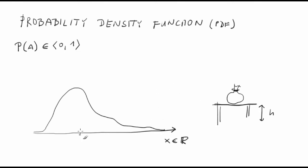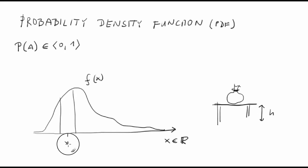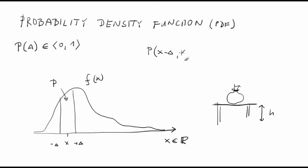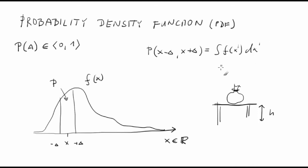The value you measure is called a random variable because the outcome of your measurement, or more generally an experiment, is random. Let's assume we have such a continuous random variable x. Let's further assume that there is a function f such that an integral of the function over a certain range gives the probability for your experiment outcome to be within that range. We can write it as: probability of x in [x minus delta, x plus delta] equals the integral of f(x') dx' from x minus delta to x plus delta.